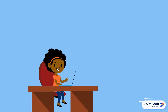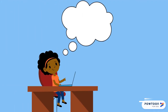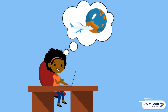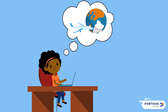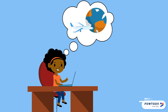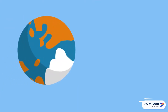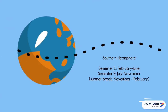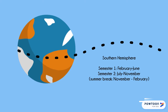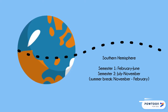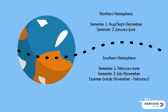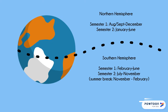As you start to research and narrow down the programs you're interested in, be sure to pay attention to the details on each program's own website. One example of an important detail is the program dates. Some programs in the Southern Hemisphere start in July and end in November, while Northern Hemisphere programs usually start in August or September and end in late December.